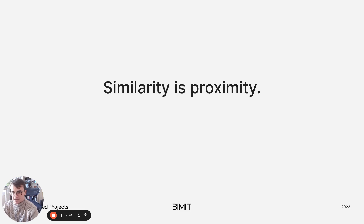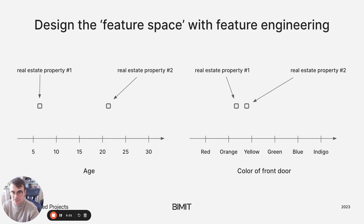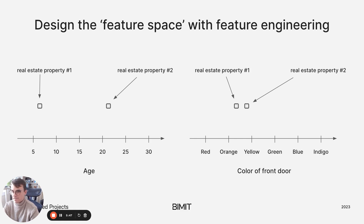The power of this feature space is that it encodes real-world relationships as geometric relationships, and in this feature space similarity is proximity. If we have two things and describe them using features and they fall close together in the feature space, we know they are more similar than if those two objects fell further apart. Feature engineering is a design process — we design the space in which we operate. Depending on what features we include, we might push things together making them seem more similar, or pull things apart making them appear less similar.